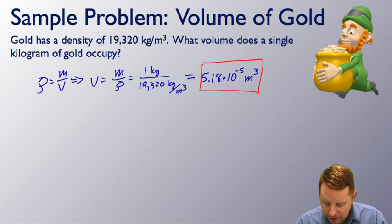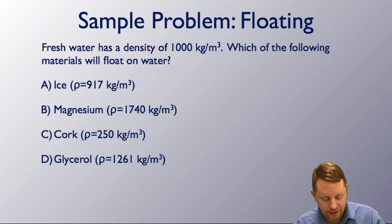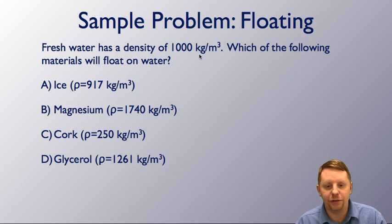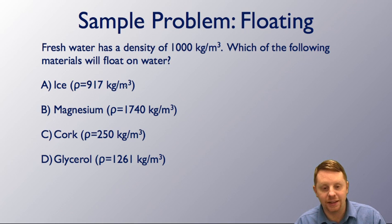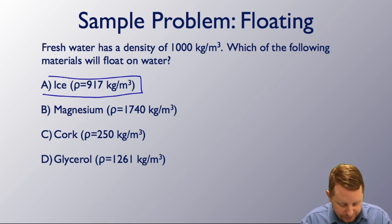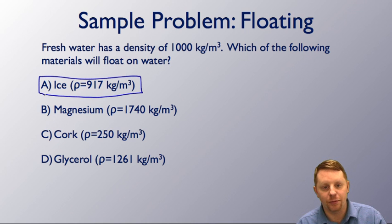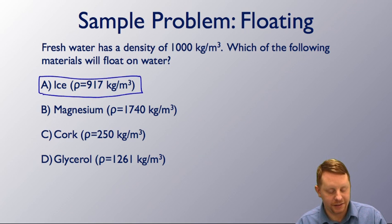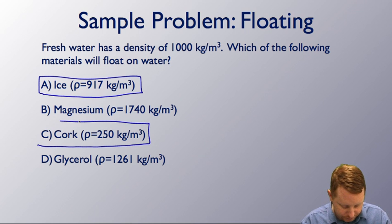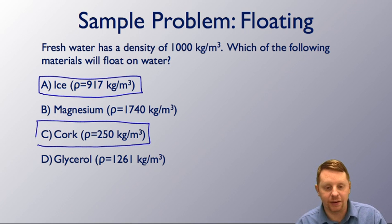Let's talk about things that float. If fresh water has a density of 1,000 kilograms per cubic meter, which materials float on water? Ice at 917 kilograms per meter cubed is less dense than water, so it floats. Magnesium is more dense, so it sinks. Quark is less dense, so it floats. Glycerol at 1,260 kilograms per meter cubed is more dense than water, so it won't float.